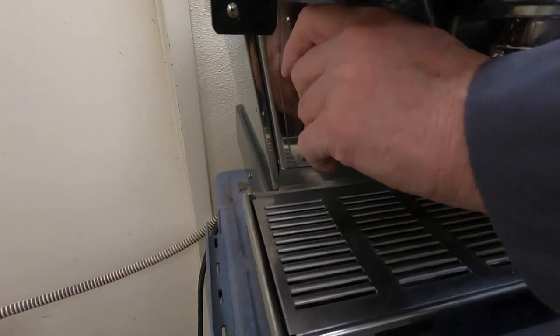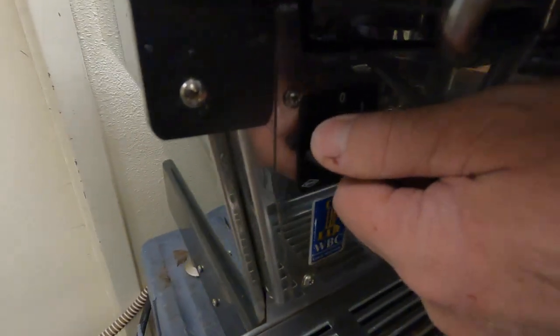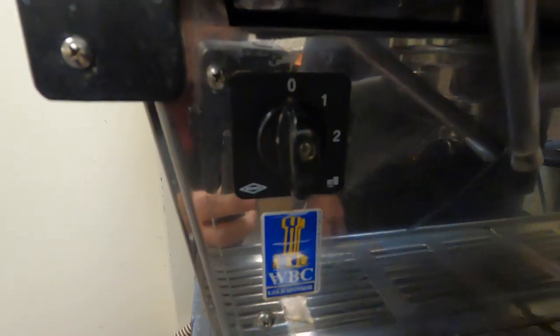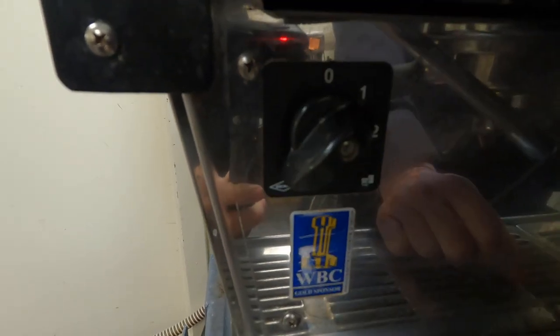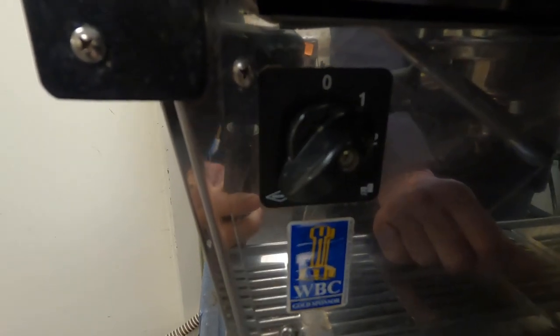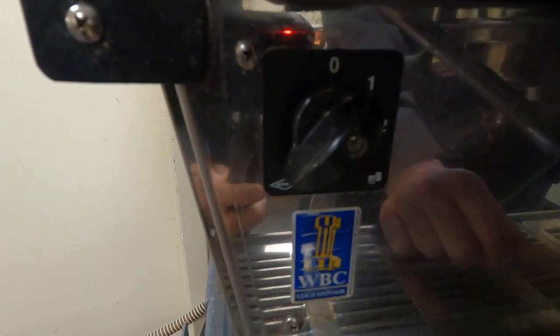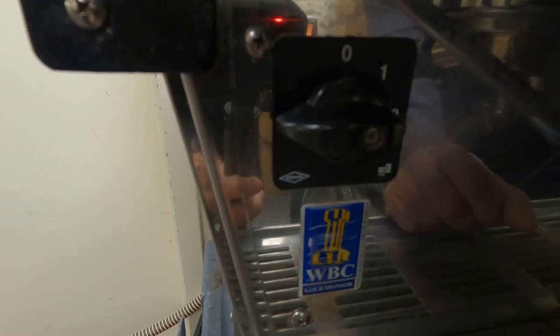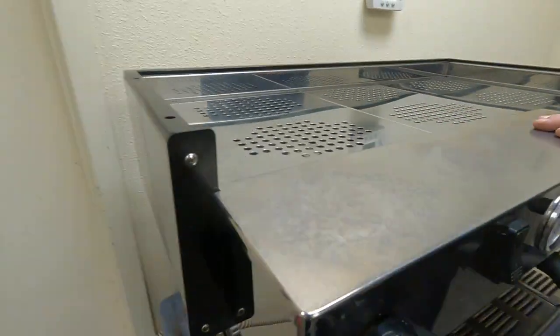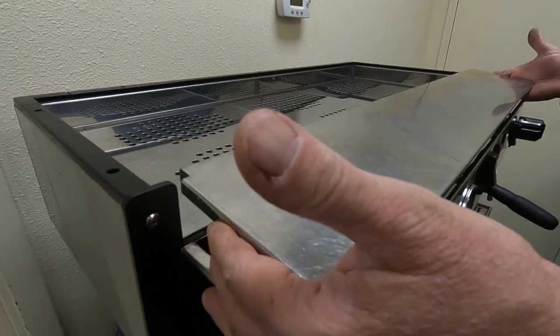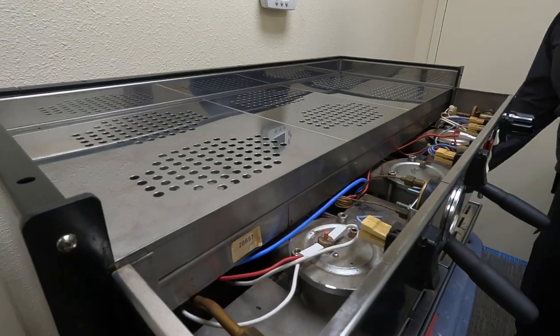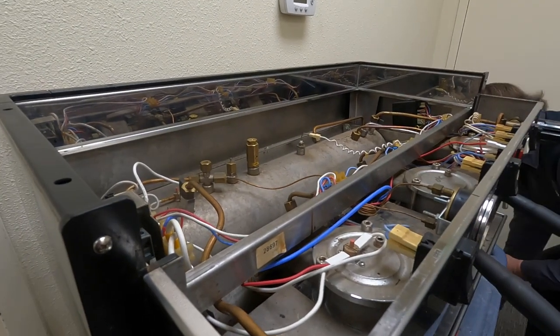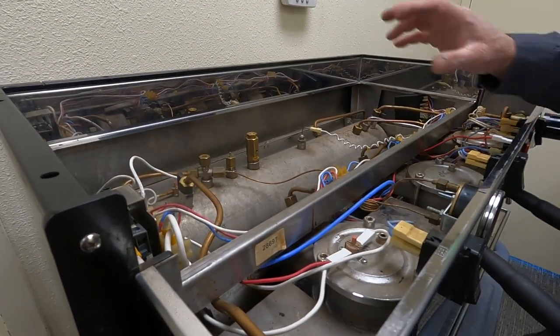The on-off is a three position switch. You want to turn it to position zero, which should be straight up and down. Position one just activates the electronics for boiler filling and activating groups, but it will not heat. Position two is everything on. Now we can remove our front panel, front top panel. Here's our steam boiler.